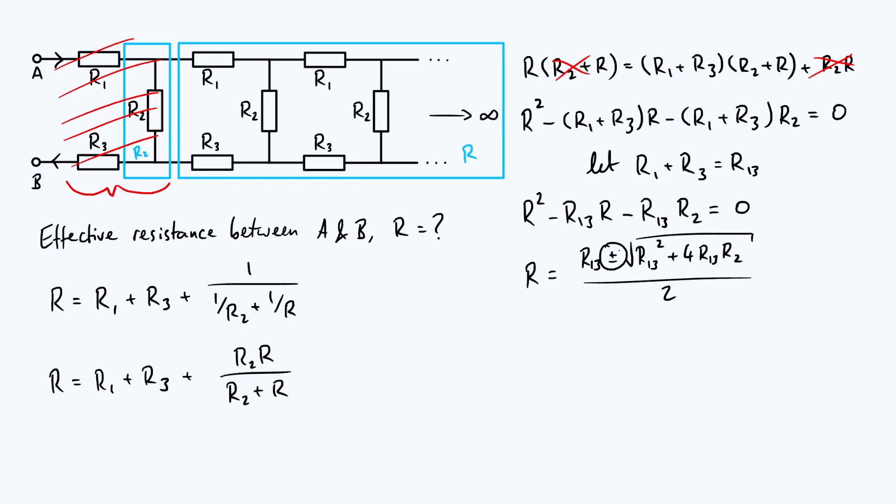Now are the plus and minus both valid solutions or do we only keep one of them? Notice that the entire square root term is bigger than R13 because what you've done is squared R13 added something positive on because resistance is positive and then taken the square root and by doing that you're going to definitely end up with something bigger than R13 itself so you can't have the minus sign solution because then you'd be doing R13 minus something bigger than R13 which is negative and of course resistances can't be negative and so we can just get rid of this plus or minus and only keep the positive solution.